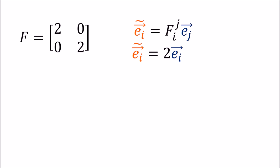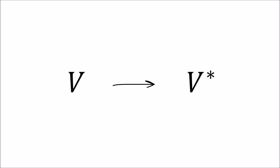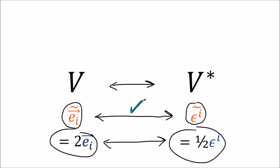The problem is that basis vectors are covariant, so going from the old basis to the new basis we transform them using the forward transform. But basis co-vectors are contravariant, so we use the backward coefficients. That means the new basis co-vectors are multiplied by one half. This method of assigning partners doesn't work very well, because while the correspondence looks nice in one basis, it becomes ugly in another — the coefficients don't match up.